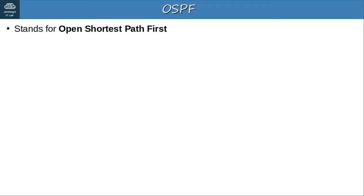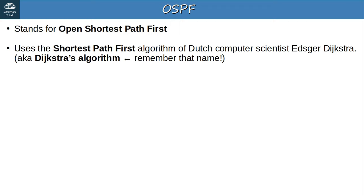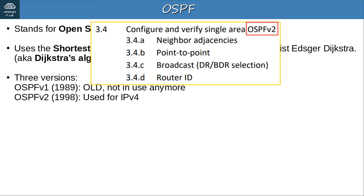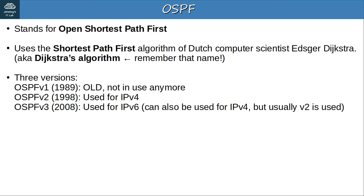OSPF stands for Open Shortest Path First. The OSPF protocol uses the shortest path-first algorithm, created by Dutch computer scientist Edsger Dijkstra. Another name for the algorithm is Dijkstra's Algorithm — remember that name, it could be an exam question. There are three versions of OSPF. Version 1 was released in 1989 and is no longer in use. Version 2 was released in 1998 and is typically used in IPv4 networks — this is the version covered by the CCNA exam topics. OSPF version 3 was developed for IPv6, but can also be used for IPv4.